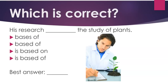Which is correct? Number 1. His research, the study of plants. A: basis of, B: based of, C: is based on, D: is based of.